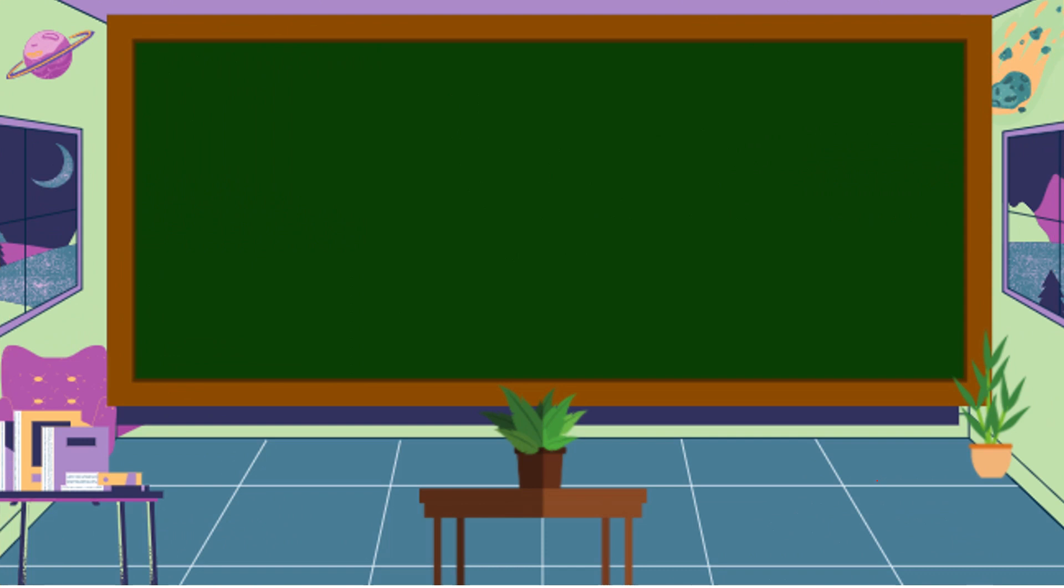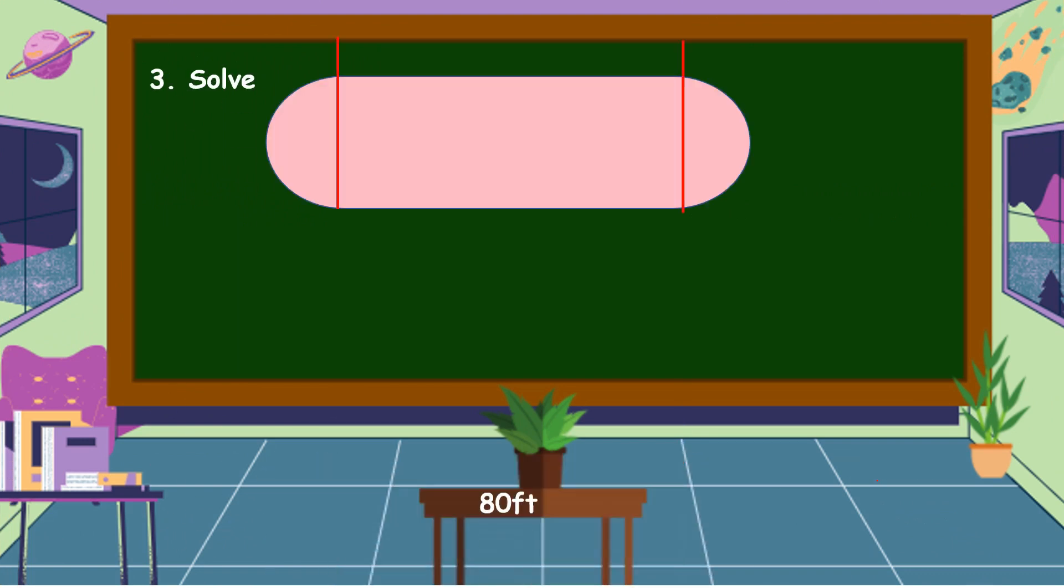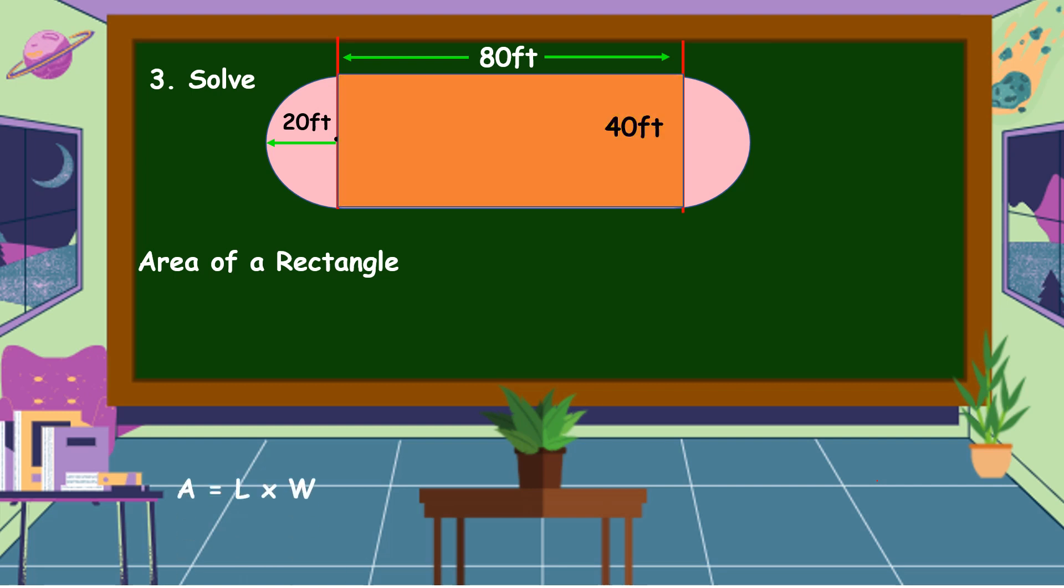The next step is we are going to carry out the plan. Let's solve the problem. We are going to find the area of a rectangle. In finding the area of a rectangle, we are going to use this formula: Area equals length times width. The length is 80 feet and the width is 40 feet. Let's multiply. 80 feet times 40 feet is equal to 3,200 square feet. This is the area of a rectangle.